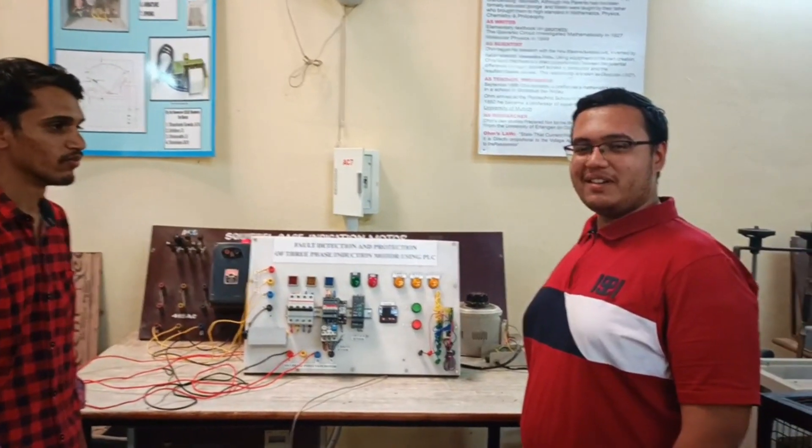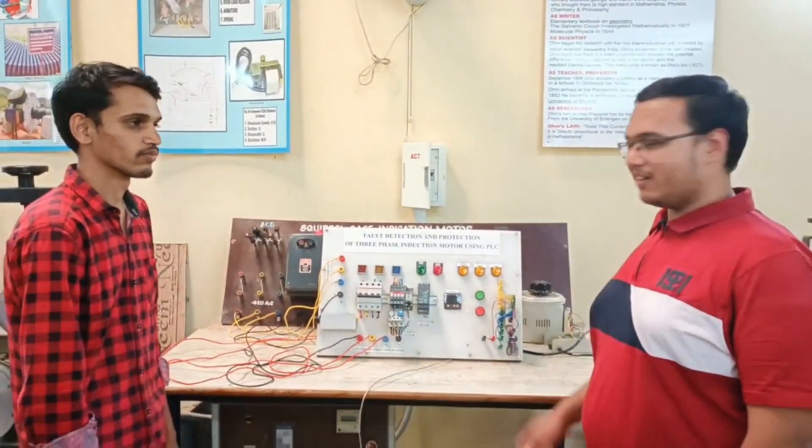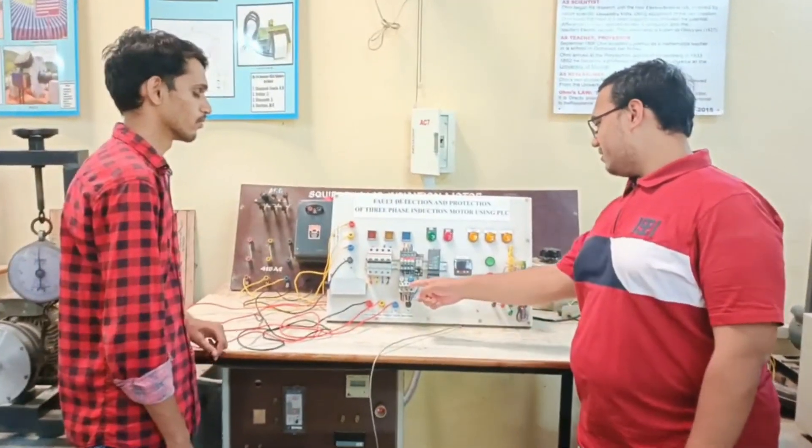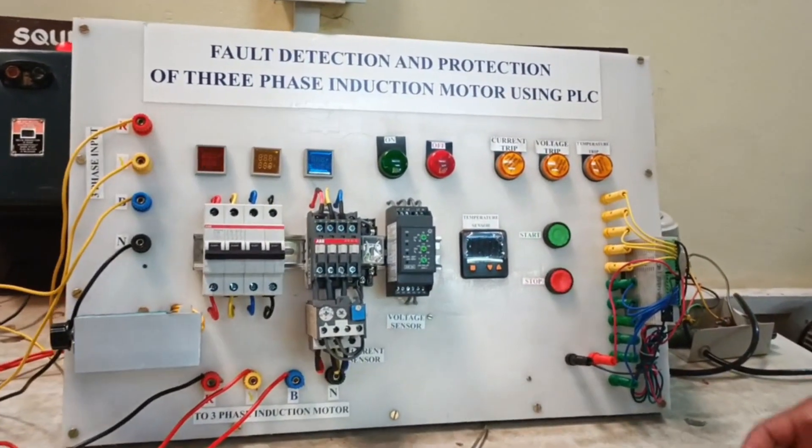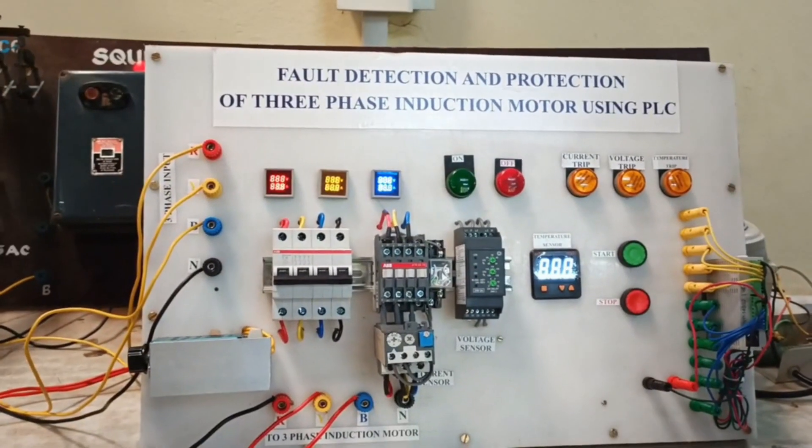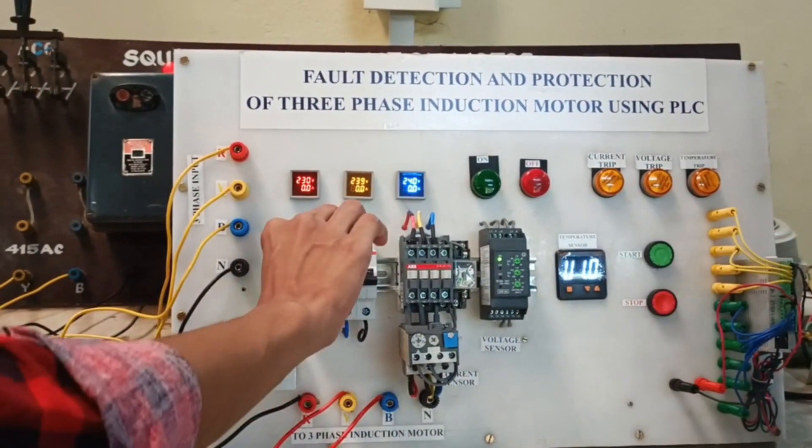So now we are going to demonstrate the overload fault. So this is the overload relay which will detect when there is an overload and stop the induction motor. So now we switch on the supply, switch on MCB and press the start button.